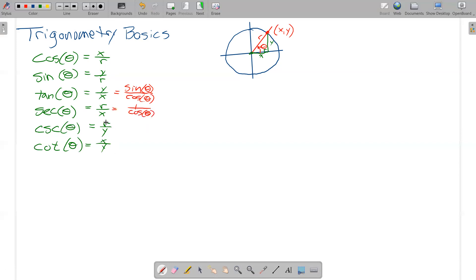Cosecant r over y, sine y over r, so those guys are reciprocals. So that's one over the sine of theta. And then the cotangent x over y versus the tangent y over x, those are reciprocals too. So that's one over the tangent. So a few different ways to view those.